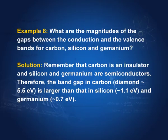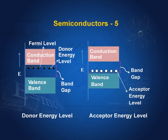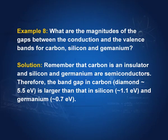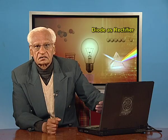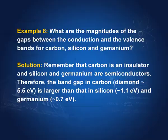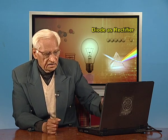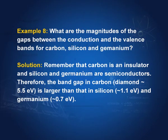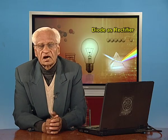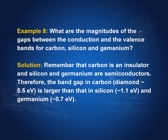Example: What are the magnitudes of the gaps between the conduction and valence bands for carbon, silicon, and germanium? In a semiconductor, we have a conduction band and a valence band, and the gap between the two determines whether the substance acts as a conductor, semiconductor, or insulator. Diamond, which is a form of carbon, is an insulator, so we expect the gap for carbon to be very high — it is 5.5 eV. For silicon and germanium, which are semiconductors, the gaps are 1.1 eV and 0.7 eV respectively.